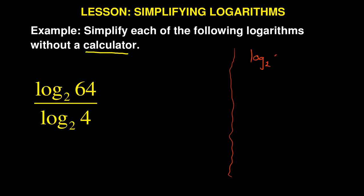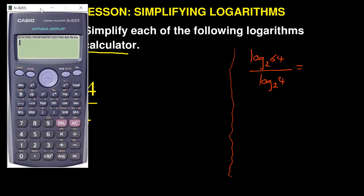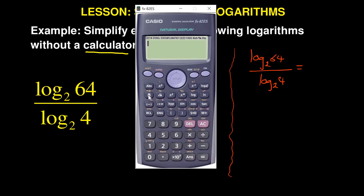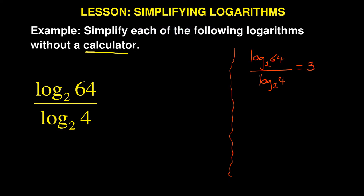So the moment the examiner says don't use the calculator, you take a calculator and you say log 64 over log base 2 of 4. Now see what the calculator is going to give you. If you punch it in, log base 2 of 64 over log base 2 of 4, the answer is 3.